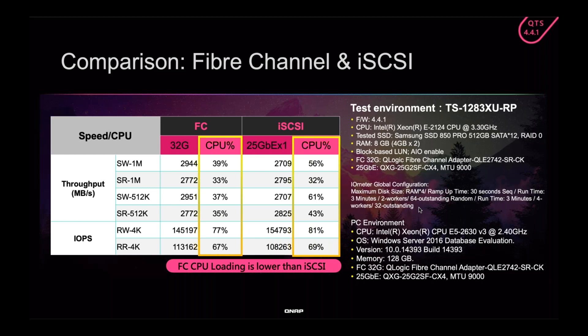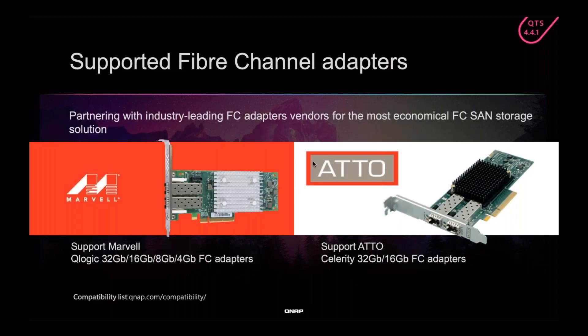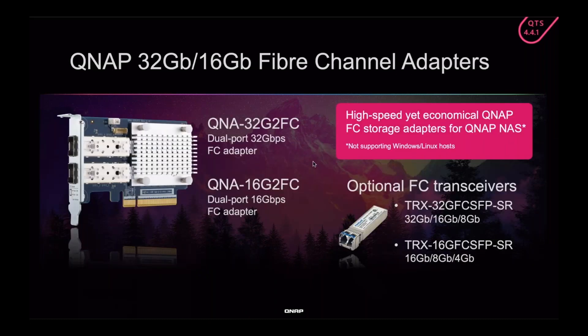For example, using Fiber Channel the CPU is at 39%, whereas using normal iSCSI — sending even slightly less data — the CPU is at 56%. So Fiber Channel helps your NAS not have to work as hard and helps you send data at low latency and fast. We support the ADO Fiber Channel cards as well as our own Fiber Channel cards in both 32G and 16G, and we also have Fiber Channel transceivers in 32G and 16G.